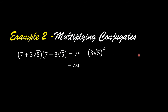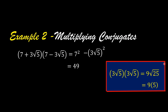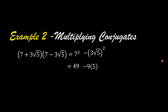5 times 9 is 45. Or you can do it this way: 3 square root of 5 times 3 square root of 5 — 3 times 3 is 9, and square root of 5 times square root of 5 is square root of 25, which is 5. So 9 times 5 gives us minus 9 times 5, which equals 49 minus 45. 49 minus 45 is equal to 4, so the answer is 4.